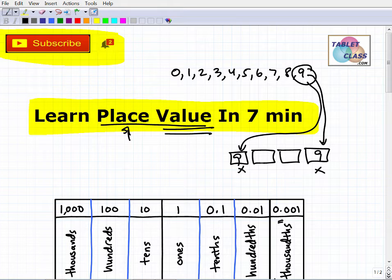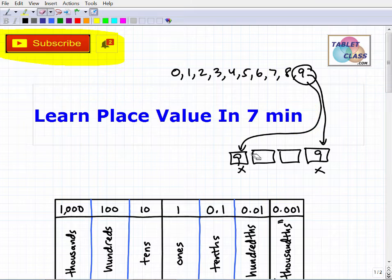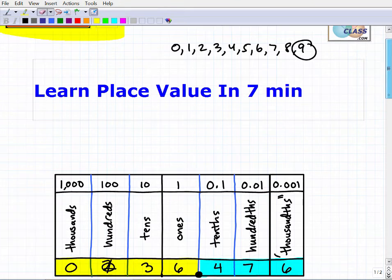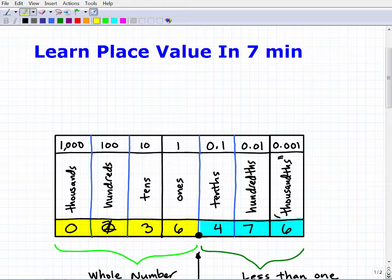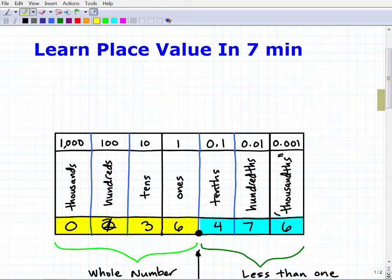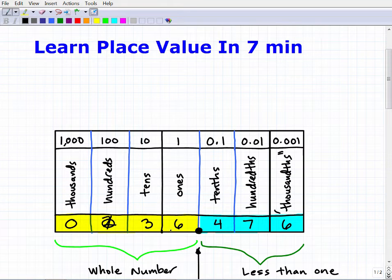How do we know this? Well, we know what value this is going to hold by using a place value chart. I could have used a more basic place value chart - this is a little bit more advanced than what you're kind of used to seeing. I wanted to be able to talk a little bit about decimals. Let's take a look at this number: 36.476.